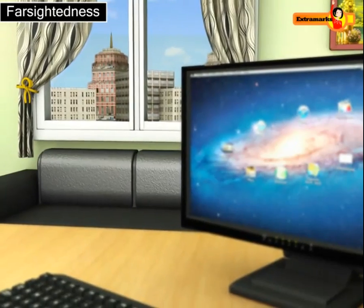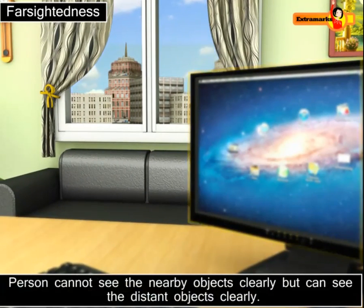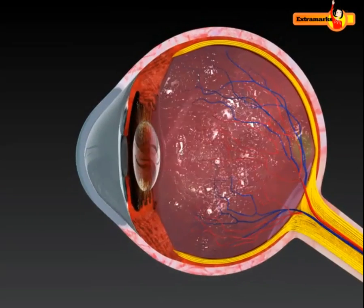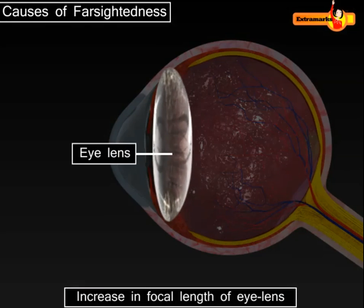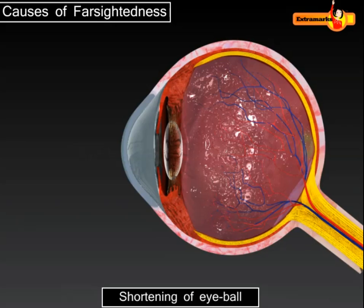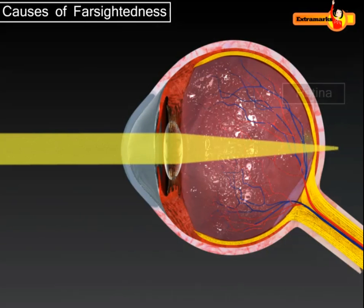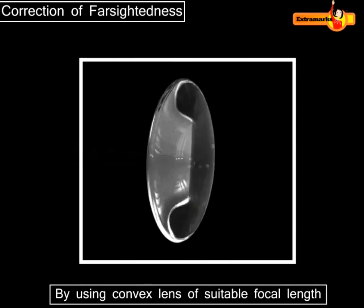Farsightedness is also called hypermetropia. In this type of defect, a person sees near objects blurred while distant objects appear sharp. The person suffering from farsightedness has either a thinner eye lens or a shorter eyeball, thus the rays of light from a nearby object cannot focus at the retina to give a distinct image.